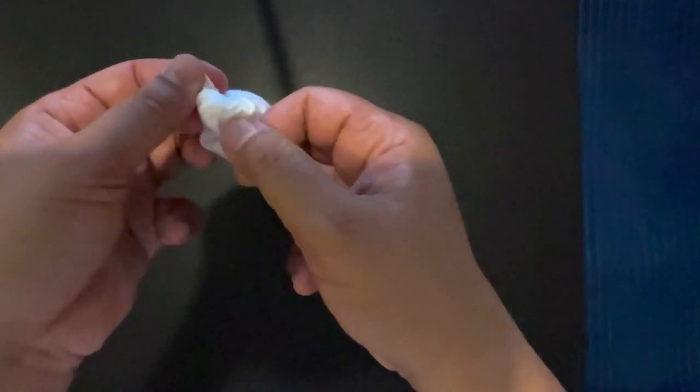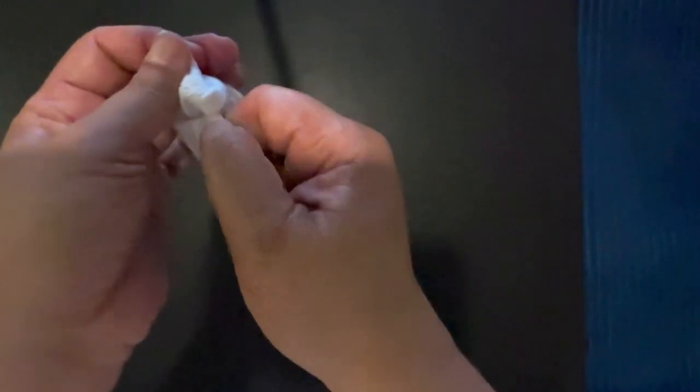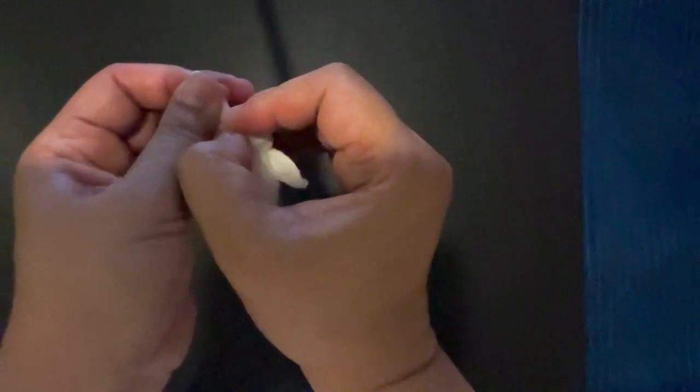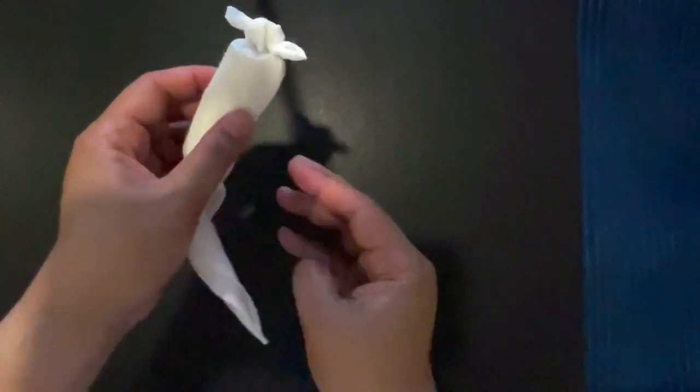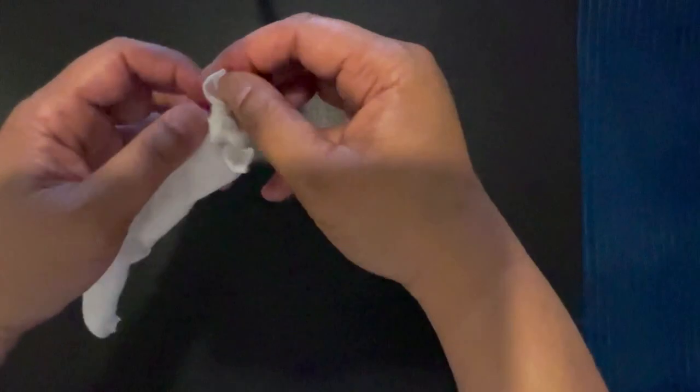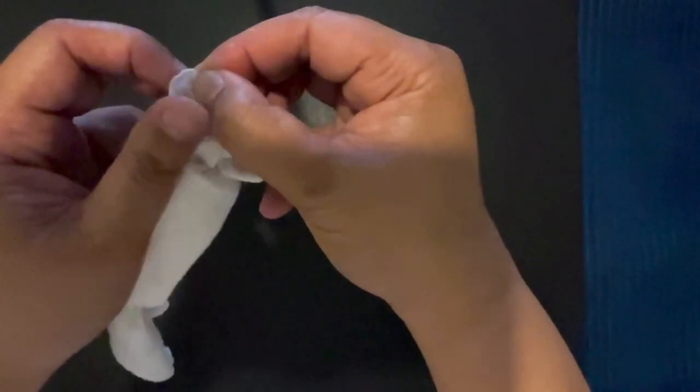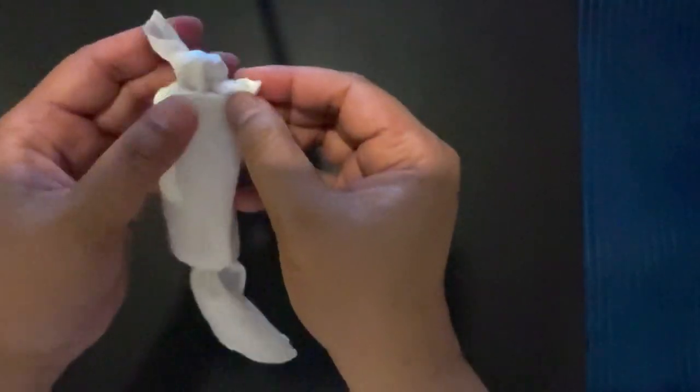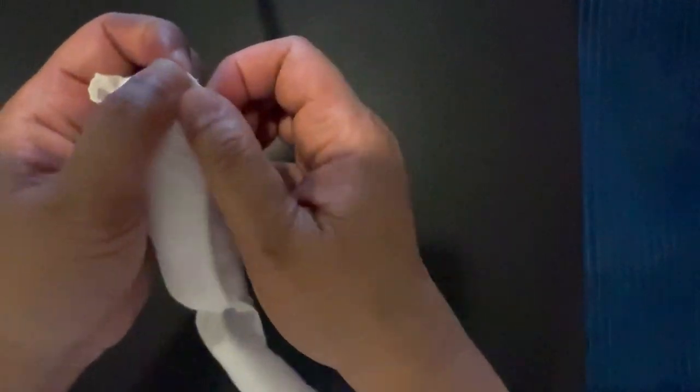As you can see here, I can just pull it like a little bow to form the head, and the two things that are folding out there will be the ears. There you have it, a little mouse.